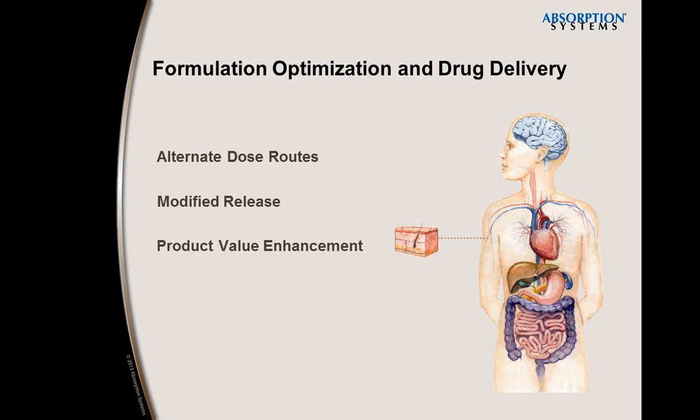By isolating dermal tissues, you can eliminate interference from other physiological factors present in conventional in vivo pharmacokinetic studies. These models can be used in early stage preclinical studies to compare different formulations of your drug, or can be used post-marketing to evaluate new formulations and determine the feasibility of various routes of administration.